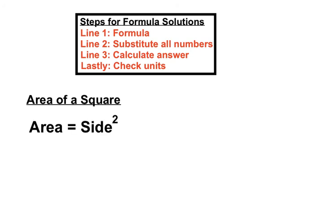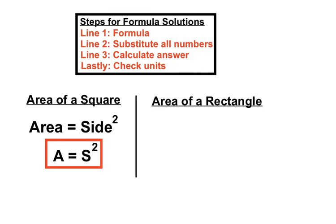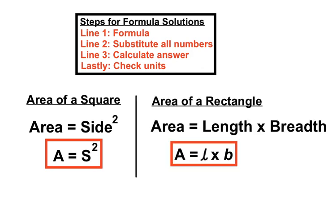The area of a square we found out was the side length squared, or A equals S squared. And the formula for the area of a rectangle was length times breadth, A equals L times B. Pretty straightforward formulas. Once we sub the numbers in, we were careful with our units. And if we set it out nicely, the formula does most of the work for us.